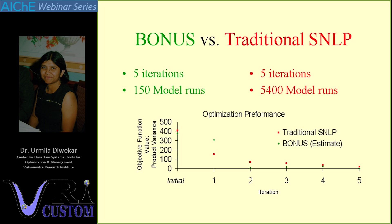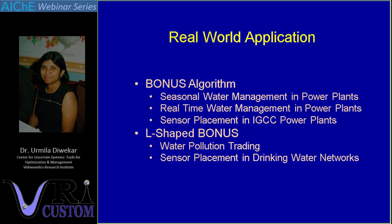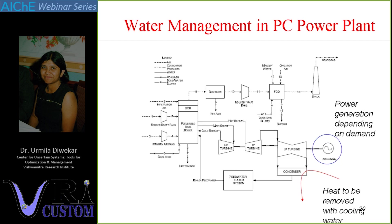Real-world applications of BONUS include seasonal water management in power plants, real-time water management in power plants, sensor placement in IGCC power plants, and a modified BONUS algorithm combined with the L-shape stochastic programming algorithm for mixed integer nonlinear programming problems. Additional real-world examples include water pollution trading and sensor placement in drinking water networks. I am going to talk about two of these applications.